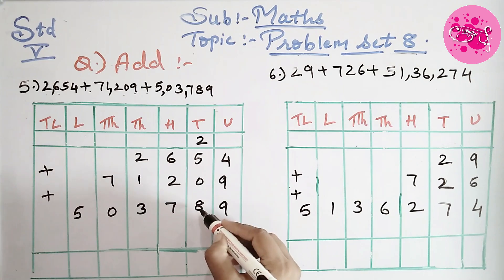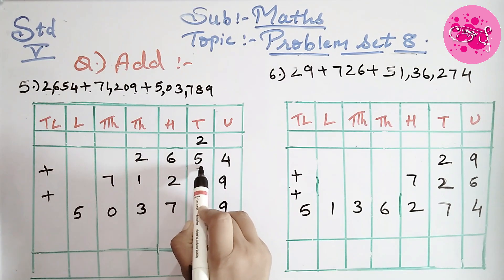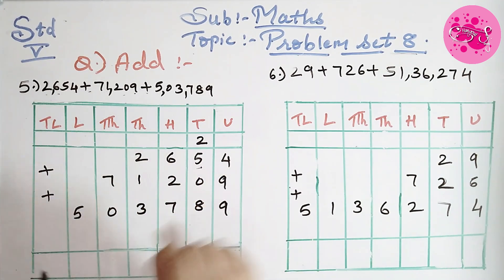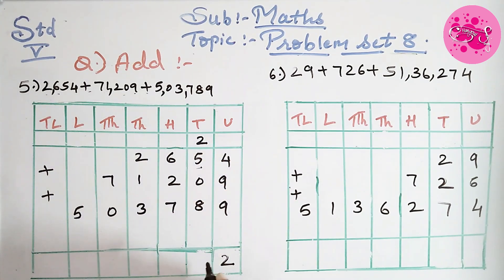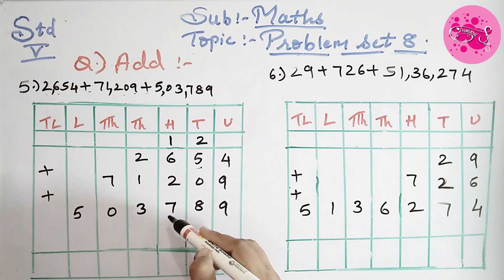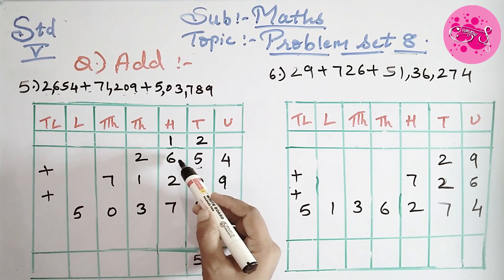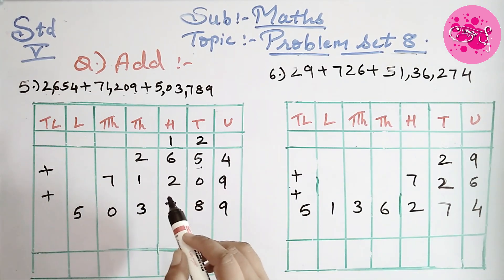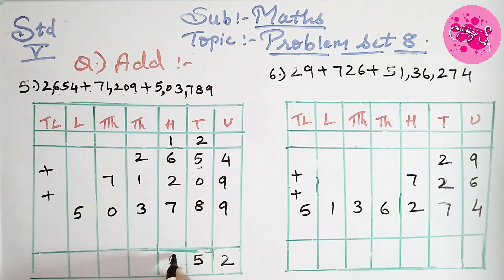Then we go to the next number: 8 plus 0 is 8, then 8 plus 5 is 13, and 13 plus 2 is 15. So write 5 down and carry 1. Then the next number: 7 plus 2 is 9, 9 plus 6 is 15, and 15 plus 1 is 16. Write 6 down and carry 1.